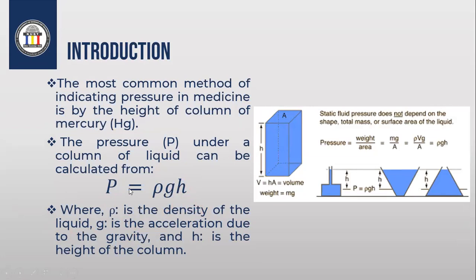Where does this formula come from? Pressure is force per area, as stated in the definition. Force is M times G, over area A. The mass M can be written as ρ times V — density times volume. So we have ρ times V times G over A. V over A equals the height of the column H. Therefore, pressure equals ρ times H times G, or ρGH — which is the equation we use.